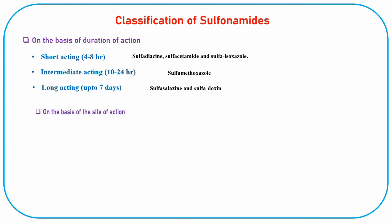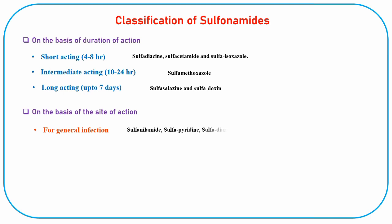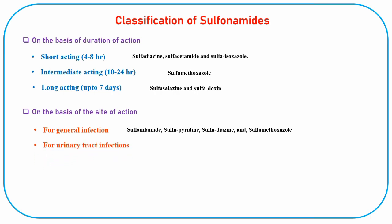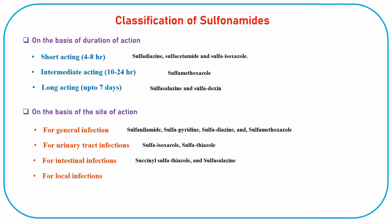On the basis of site of action: sulfonamides for general infections include sulfanilamide, sulfapyridine, sulfadiazine, and sulfamethoxazole. Sulfonamides for urinary tract infections include sulfisoxazole and sulfathiazole. Sulfonamides for intestinal infections include succinylsulfathiazole and sulfasalazine. Sulfonamides for local infections include sulfacetamide, mafenide, and silver sulfadiazine.